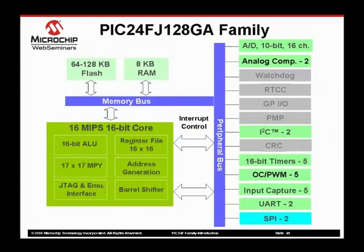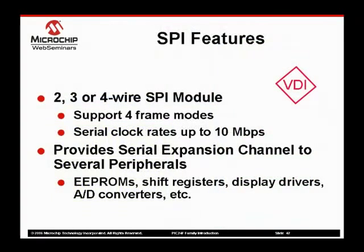With the I2C completed, we can now move on to the last peripheral to be covered today. The PIC24FJ128GA devices include two independent SPI channels. Like the I2C, SPI is used for communications with a number of different peripherals. The SPI module in the PIC24F family of microcontrollers can be configured to operate with two, three, or four wire connections.